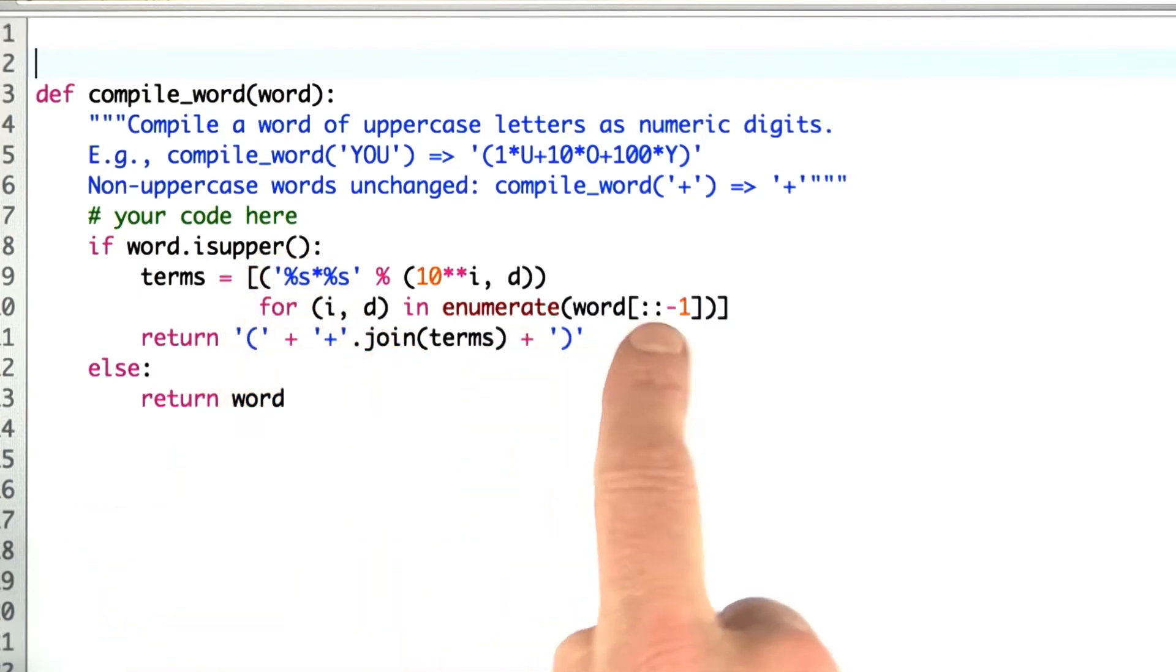then I enumerate all the letters in the word. I reverse it, so this slice says reverse it. The missing numbers on either side of the colon says take the whole word, and the minus one says go from the back forward, so reverse the word.